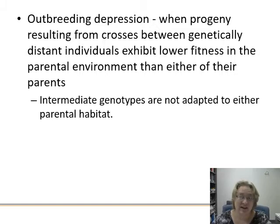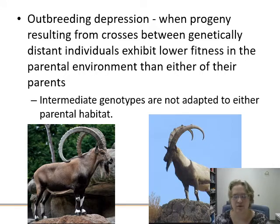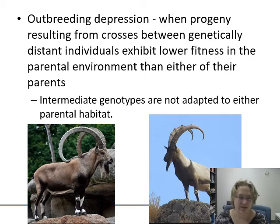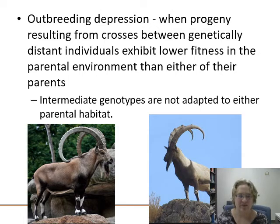Outbreeding depression can occur when too much outbreeding happens — progeny resulting from crosses between genetically distant populations have lower fitness in the parental environment than either parent. The intermediate genotypes are just not adapted to either habitat. This was a problem in Iran when they tried to reintroduce ibex by bringing in Middle Eastern ibex — the hybrids ended up calving in the coldest part of winter, entirely the wrong season.